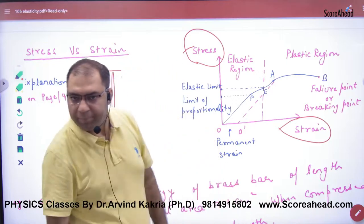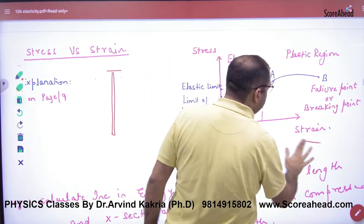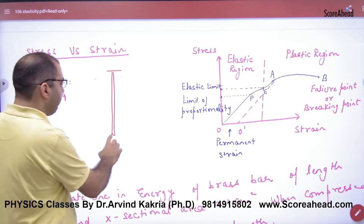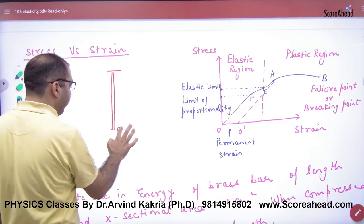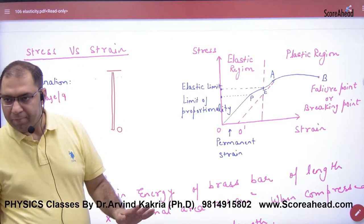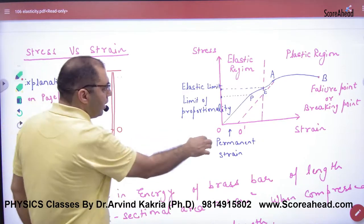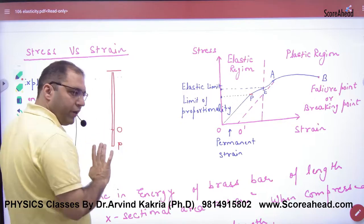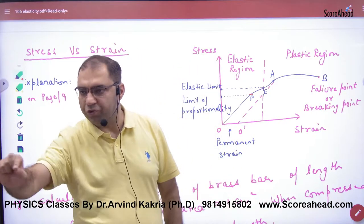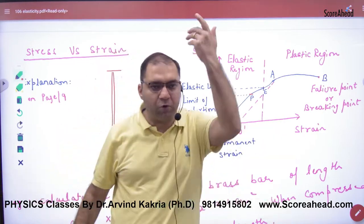I pushed the wire slightly — up to point P. So the P point is the proportional limit. At this point, stress is proportional to strain. But remember, Hooke's law only applies for some length — it does not apply if you break the wire and then claim stress is proportional to strain. It works only for a limited range.